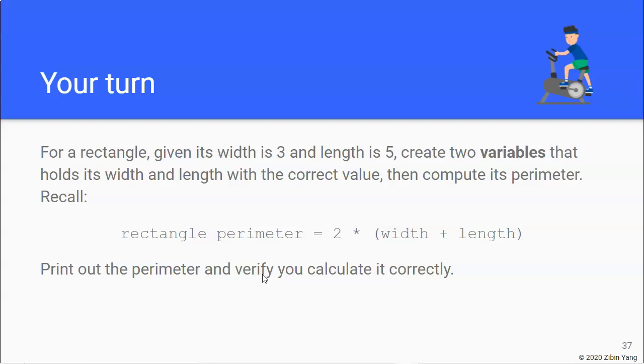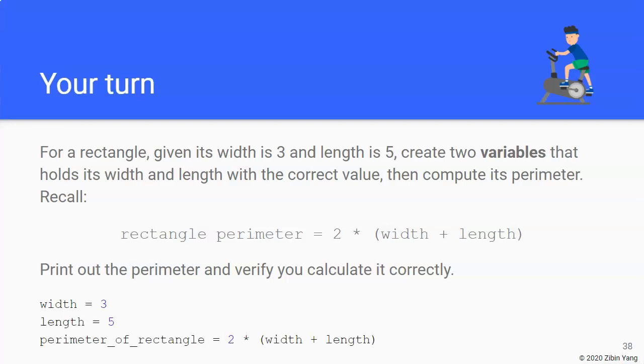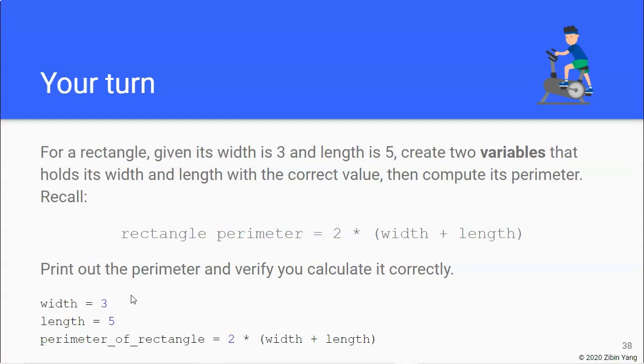And assuming that you have done that, here would be the code to do that. We'll just create a variable called width and assign it the value of 3, another variable length assign it the value of 5. And we can compute 2 times (width plus length) in parentheses, because otherwise it would do the multiplication before the addition. And then once we do that, we assign that to another variable perimeter_of_rectangle and we can print it out. And if you've done this correctly, it should print out 16.